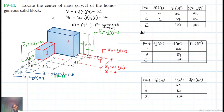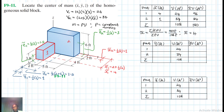Therefore, X-bar equals summation of rho·x̃·V divided by summation of rho·V. Since rho cancels, this is 180 divided by 108, which gives X-bar equal to 1.67 feet.